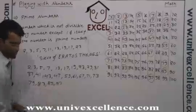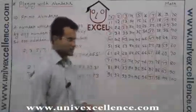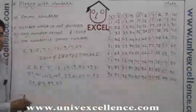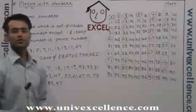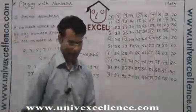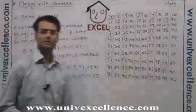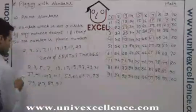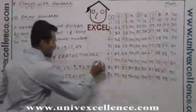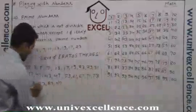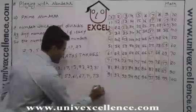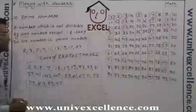So these are the numbers between 1 to 100 which are not divisible by any number. So we can say these all are prime numbers between 1 to 100.